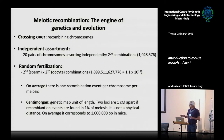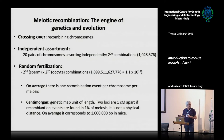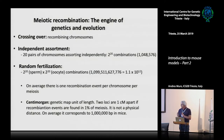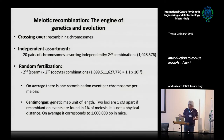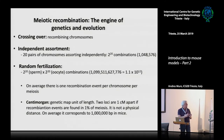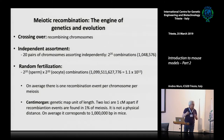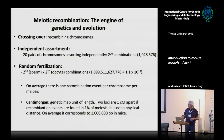One centimorgan roughly corresponds to 1 million base pairs — roughly. It is not strict in mice, because in certain parts of the genome where recombination is more frequent, the recombination distance could be shorter in base pairs. In regions where recombination is less frequent, this could correspond to a greater physical distance.